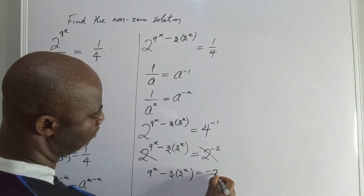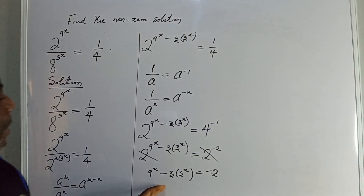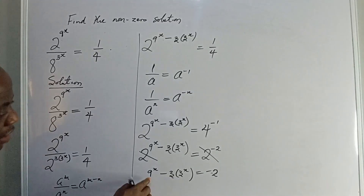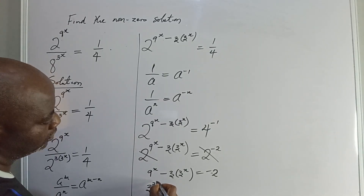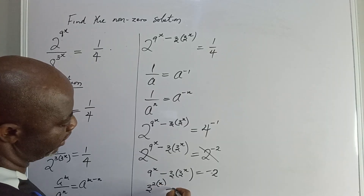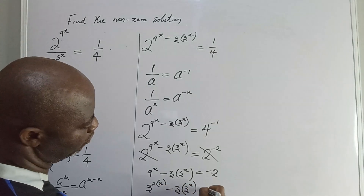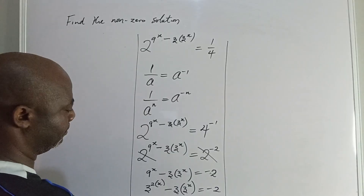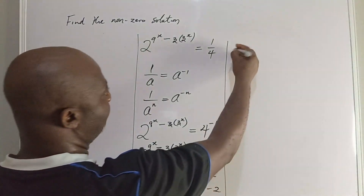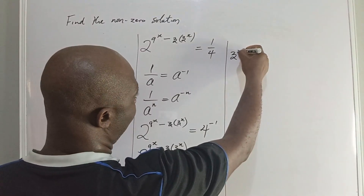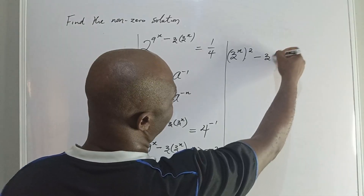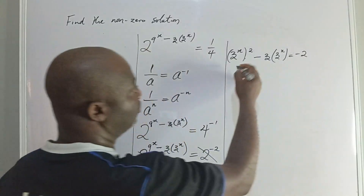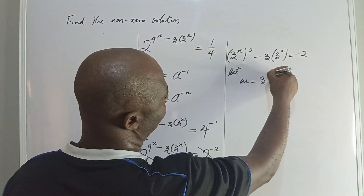So I am going to go ahead now and attempt to simplify the left hand side. What we are going to have now will be 3 to the power of 2 times x minus 3 times 3 to the power of x equal to minus 2. From here, I am going to rewrite this to give me 3 to the power of x all to the power of 2, minus 3 times 3 to the power of x equal to minus 2. So I am going to let m equal to 3 to the power of x.